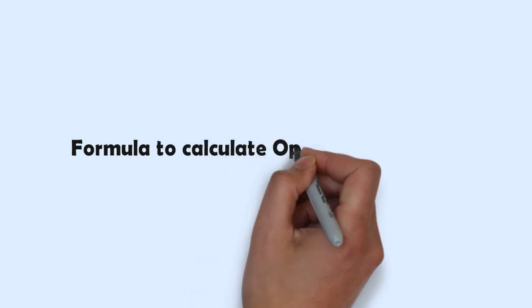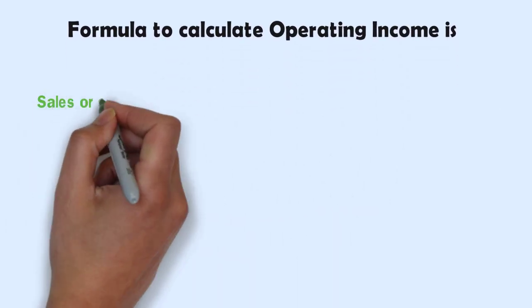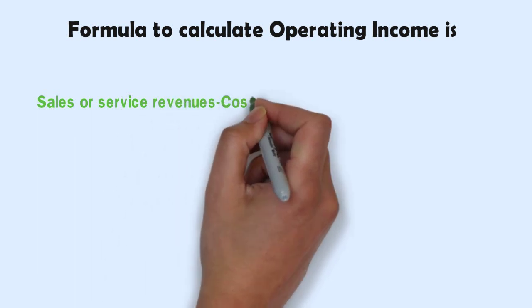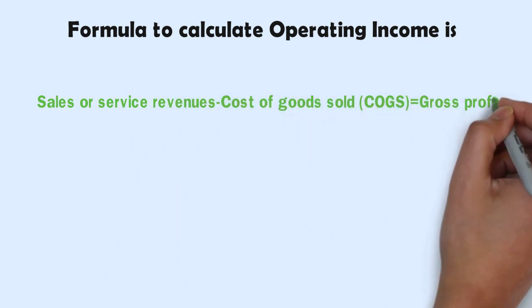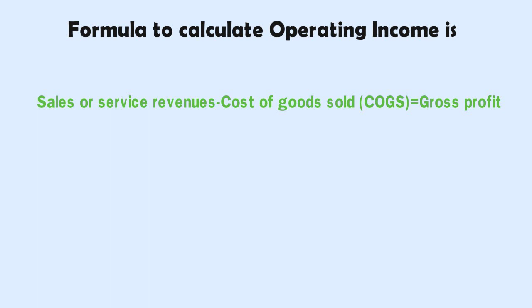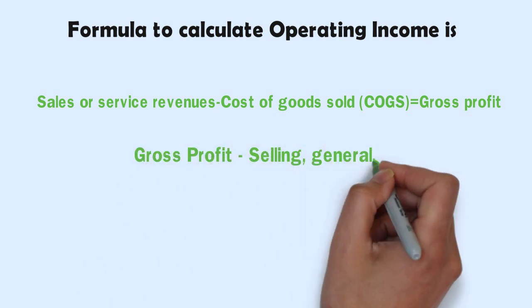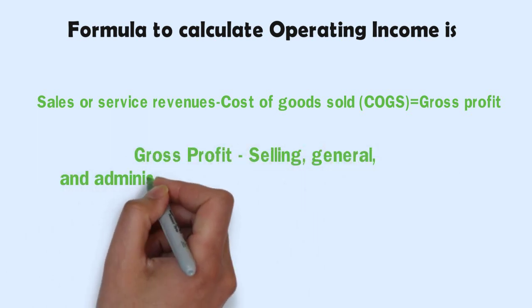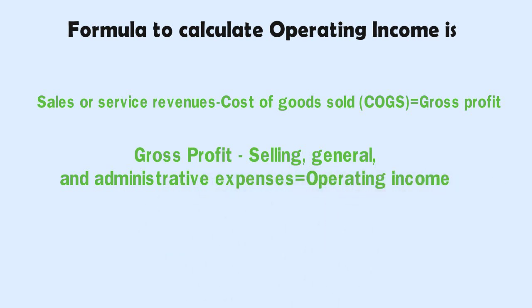Important Formulas. The formula to calculate operating income: Sales or services revenues minus cost of goods sold equals gross profit. Gross profit is then subtracted from the selling, general, and administrative expenses to equal the operating income.